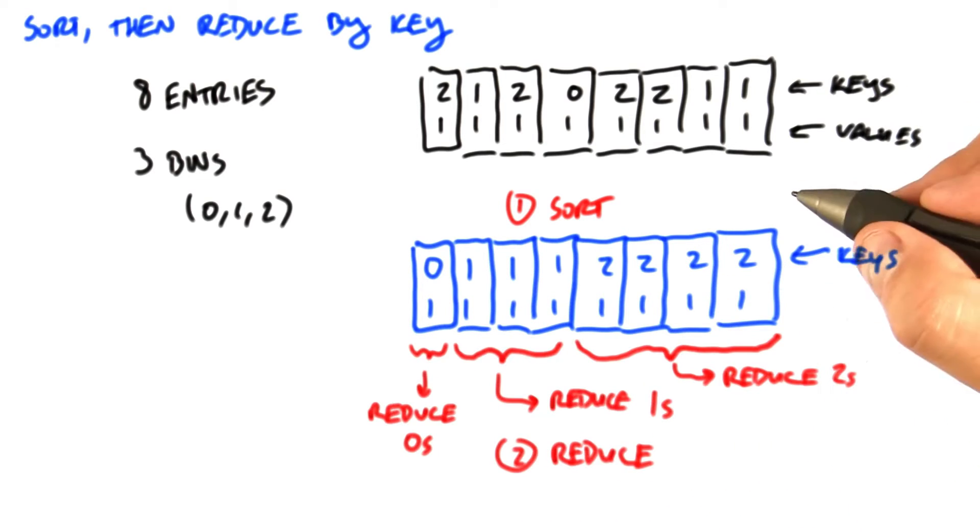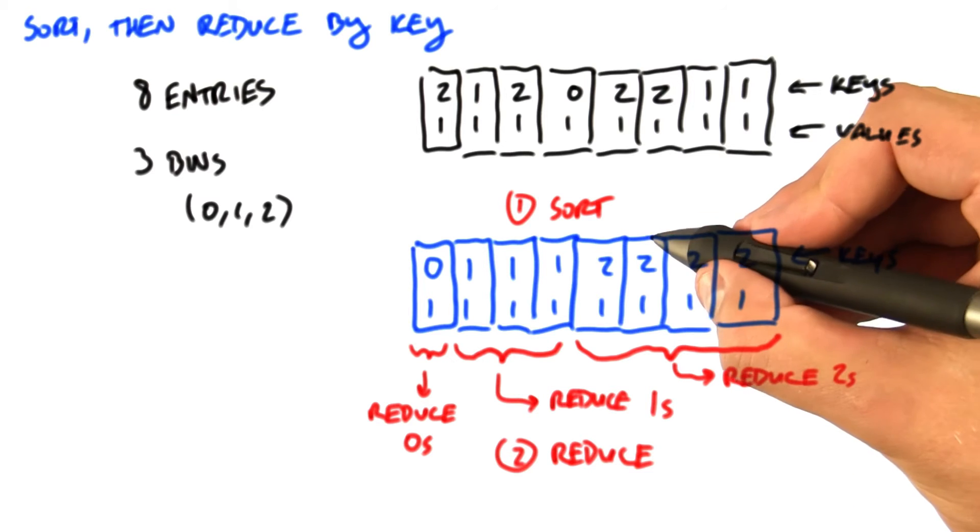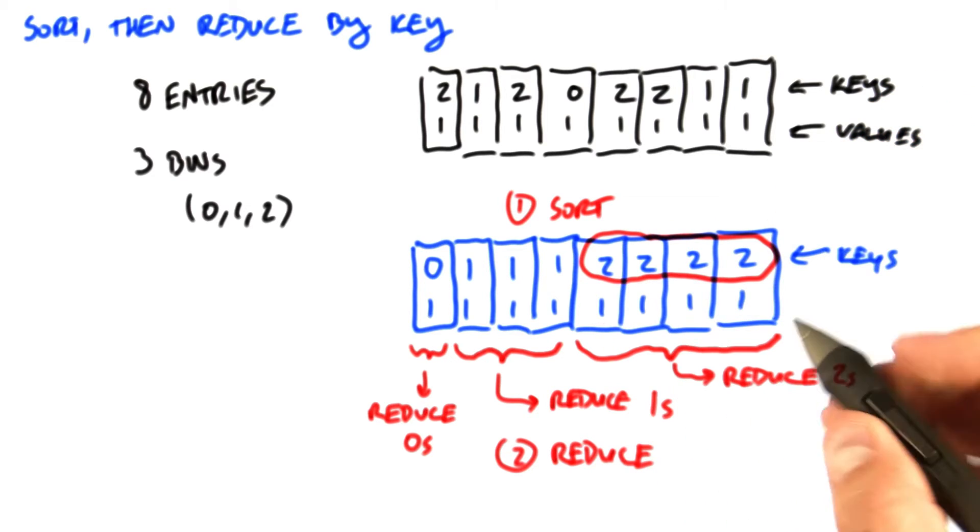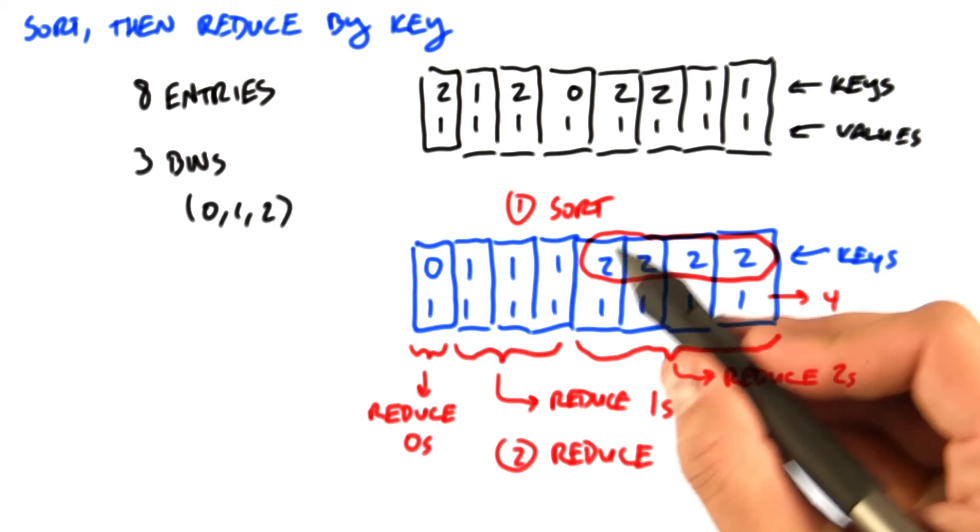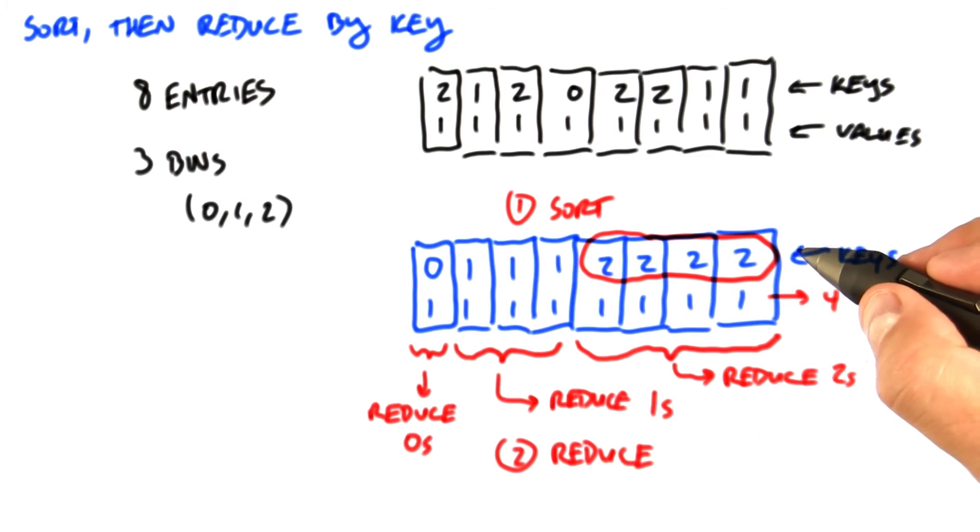And the second step is to reduce the result by key. Naturally enough, this algorithm is called reduce by key. What I mean here is to add all the elements that have the same key together. So we'd like to add these four ones up to create the reduction value of 4. Or more generally, to reduce these values using a reduction operator. Note that all elements with the same key are contiguous, which is the key to making an efficient implementation.